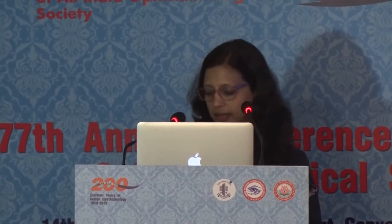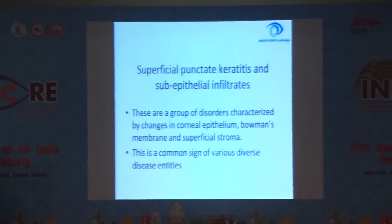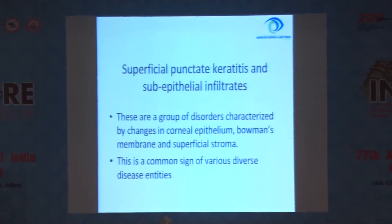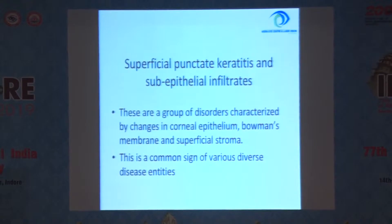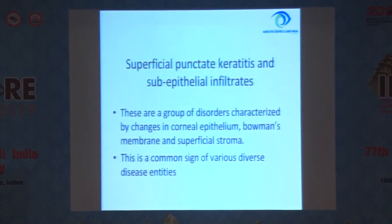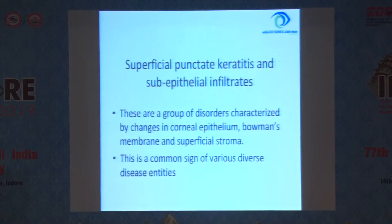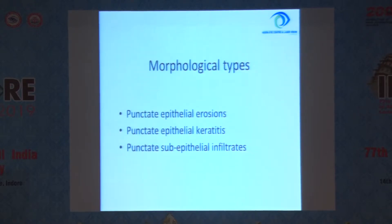Now I have a similar talk, again, on superficial punctate keratitis and subepithelial infiltrates. These are a group of disorders characterized by changes in corneal epithelium, Bowman's membrane and superficial stroma. This is a common sign of various diverse disease entities, so it is important to know what all can cause it.